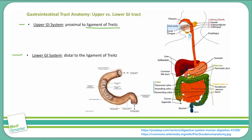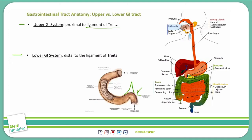The ligament of Treitz is also known as the suspensory ligament of the duodenum. On this diagram, you can see the general shape of the duodenum. We'll have a separate video specifically on the duodenum and its various parts, but for now, the ligament of Treitz attaches to the duodenum right about here. It attaches to the distal duodenum on one end, and the other end attaches to a part of the retroperitoneum.